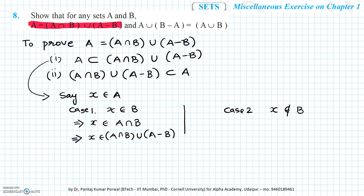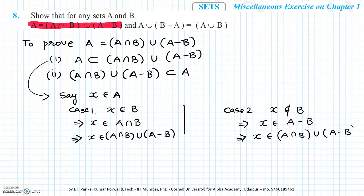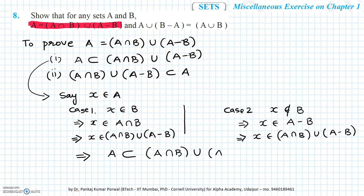Case 2: X belongs to A but X does not belong to B. Then X belongs to A minus B, and therefore X belongs to A intersection B union A minus B. In both cases, regardless of whether X belongs to B or not, X always belongs to A intersection B union A minus B. So we conclude A is a subset of A intersection B union A minus B.